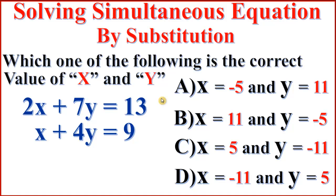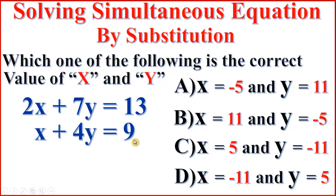Hello everyone. In this tutorial we are going to solve a simultaneous equation by using the substitution method. To solve these two expressions, that is simultaneous equations: 2x plus 7y equal to 13, and x plus 4y equal to 9. First, we have to rearrange one of the expressions.